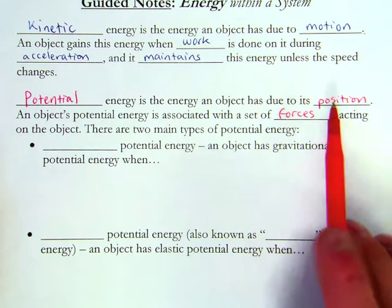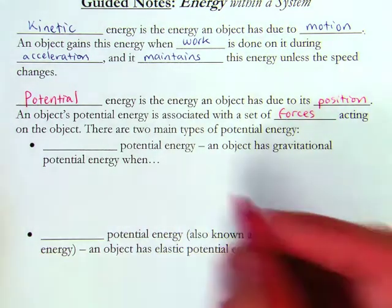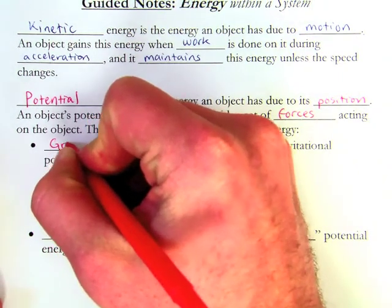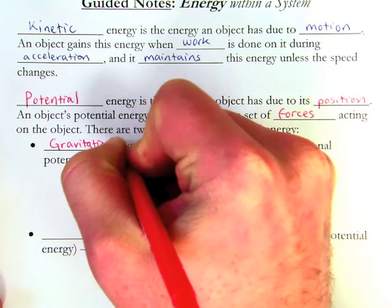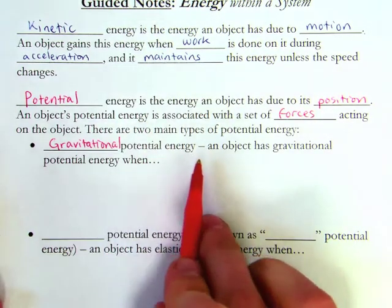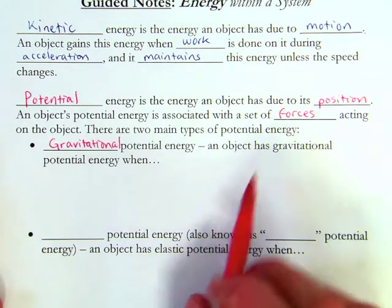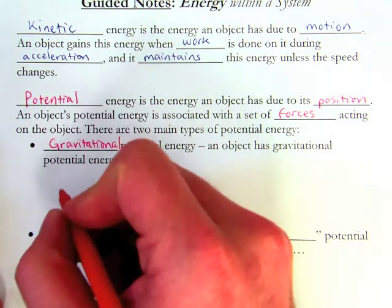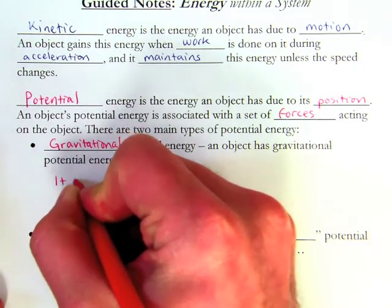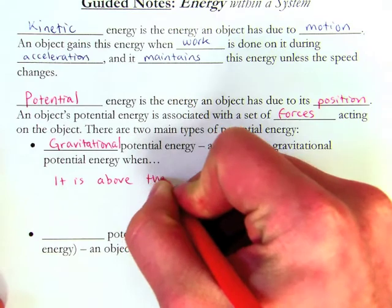First off, when you think about it, what is the force that acts on every object in the world? Gravity. Gravitational potential energy is the potential energy an object has due to the force of gravity. So an object has gravitational potential energy when it is above the ground.